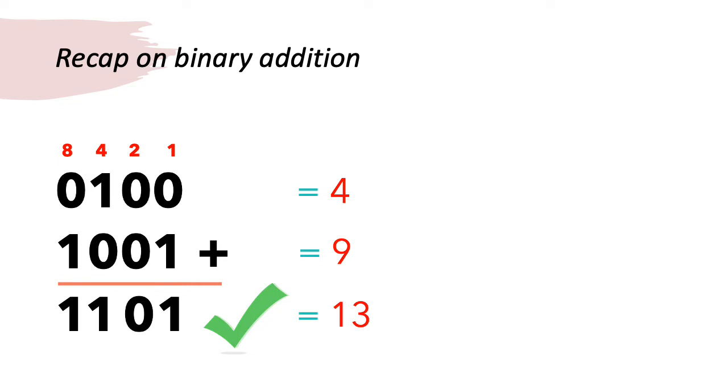So here, on the right, we've got 0 and 1, 0 and 1 is 1. Move to the left, we've got 0 and 0, which is 0. Then 1 and 0, which is 1. And 0 and 1, which is 1.